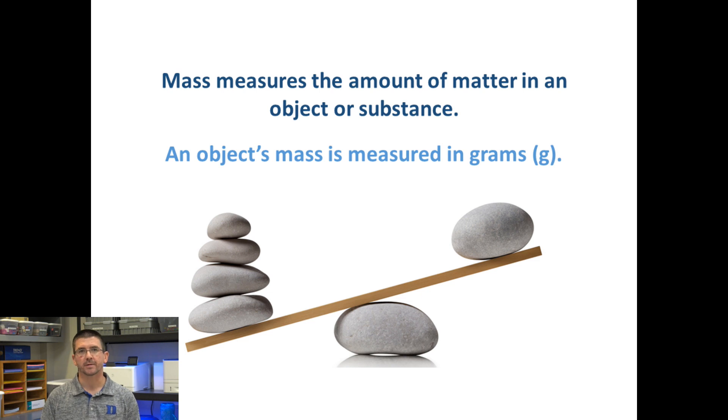Now, to give us constant units to measure by, we actually in science use the metric system. So we would measure mass in grams or kilograms. Of course, in standard American units, we would measure it in ounces or pounds.